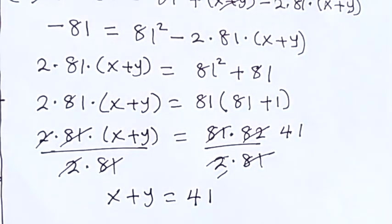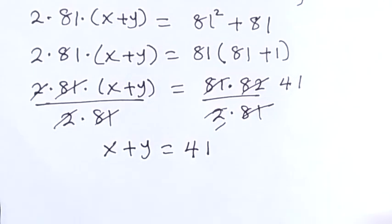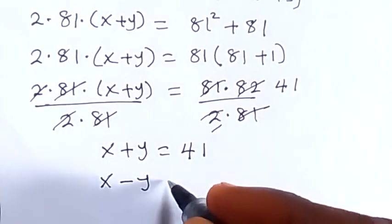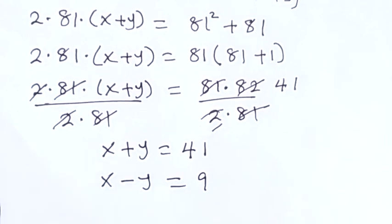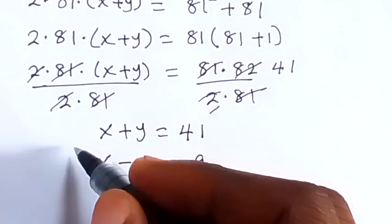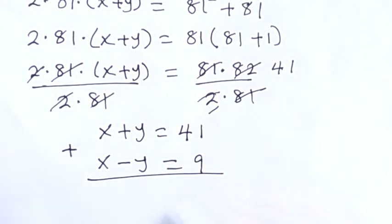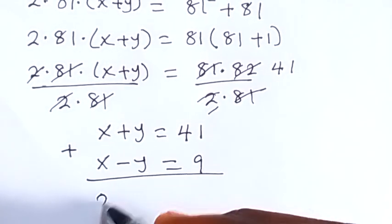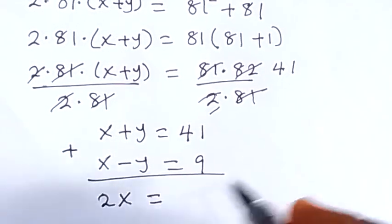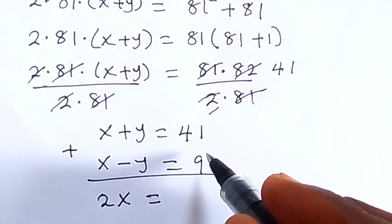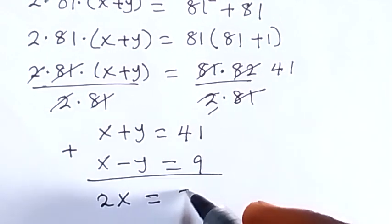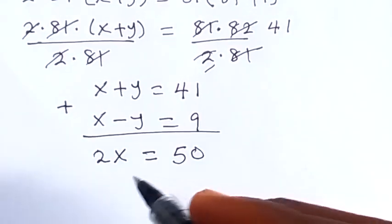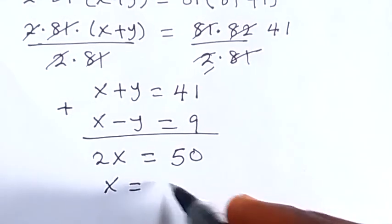From the second equation we also have that x minus y is equal to 9. Now let's solve these two equations simultaneously and add them to eliminate y. So x plus x gives us 2x, then equals 41 plus 9, which gives us 50. Dividing both sides by 2, we get x equals 25.